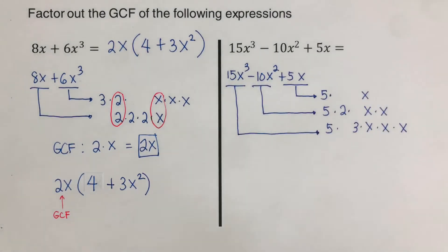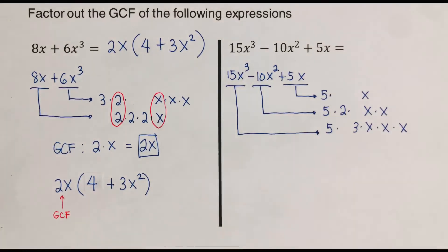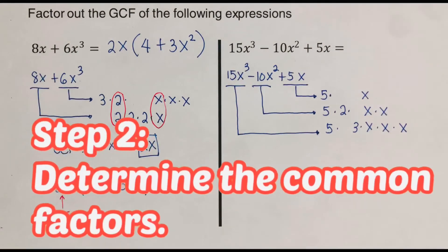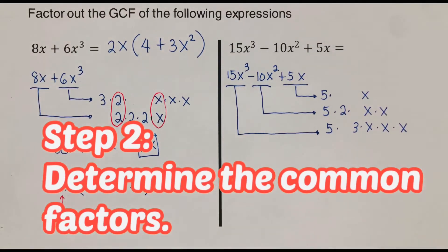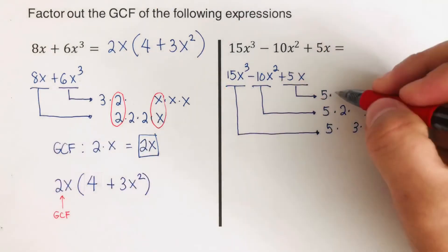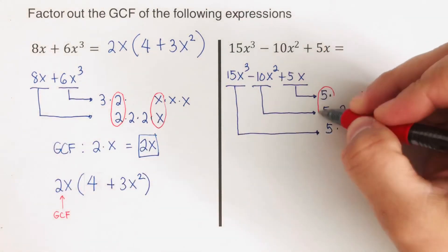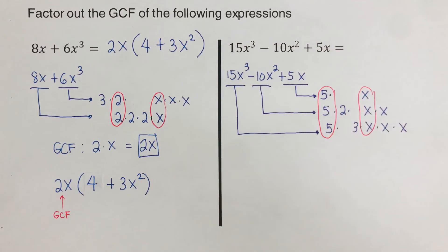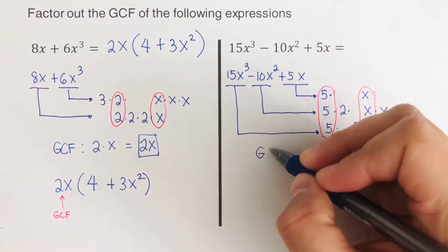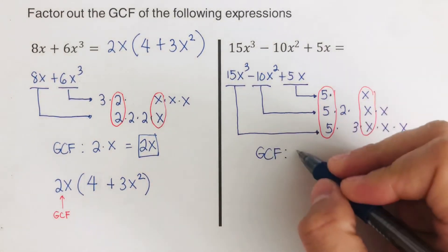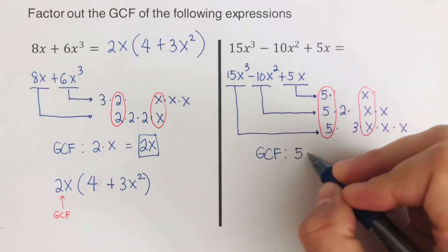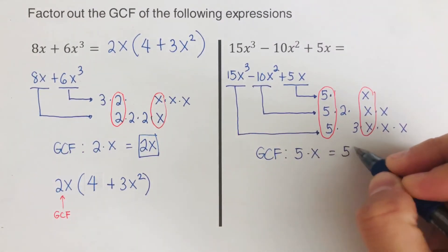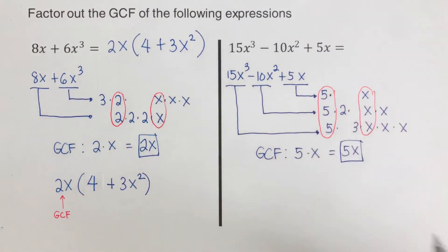I've broken down the terms into their factors. Now we're ready for step 2: determine the common factor. Looking at the factors, 5 is common to all three terms, and x is also common to all three, so our GCF is 5 times x, which is 5x.